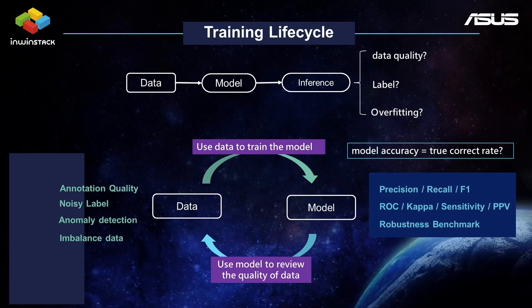For the data quality, there are a few things we may care about: one is the annotation quality, noise labels, and imbalanced data. These things always affect the quality of the training model. So sometimes we use the data to train the model, and after that we use the model to review the quality of the data.